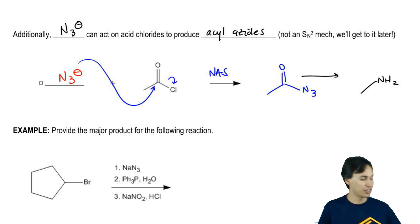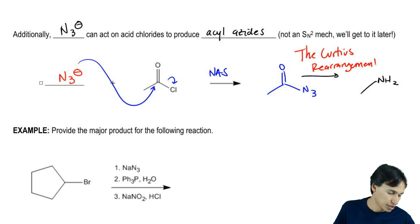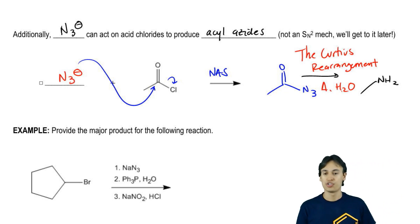This one would be the Curtius rearrangement. The reagents for Curtius were just heat and water. Just showing you guys how you don't always have to start off with that highly oxidized nitrogen. You can add the nitrogen because nitrogen is in a lot of nucleophilic compounds.